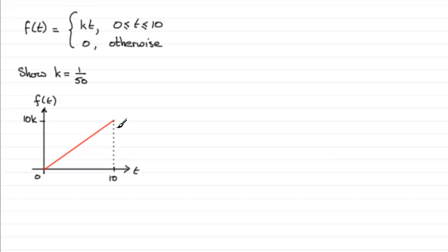Now what I know is that the area under this graph, that is the area in this triangle here, is going to come to 1. And so because it's a nice geometrical shape, a triangle, then I should be able to work that out, what k is.